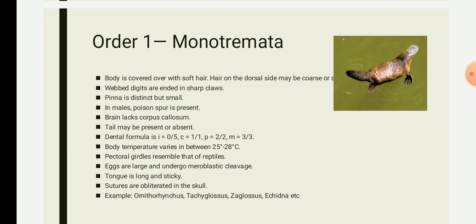In Monotremata the teeth are modified into a beak form. An example is the platypus. Another example is echidna, that is the spiny ant-eater.